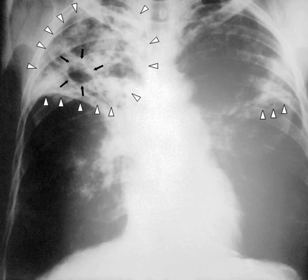Koch announced a glycerin extract of the tubercle bacilli as a remedy for tuberculosis in 1890, calling it tuberculin. While it was not effective, it was later successfully adapted as a screening test for the presence of pre-symptomatic tuberculosis. World Tuberculosis Day is marked on 24 March each year, the anniversary of Koch's original scientific announcement.